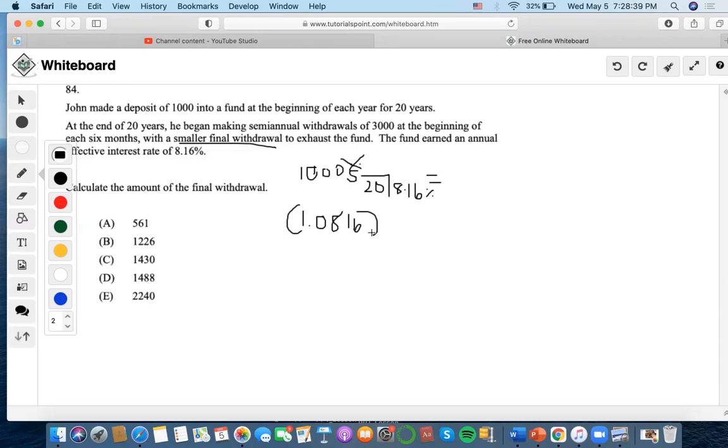8.16 as the interest rate, 0 as the present value. We're going to compute the future value. It's going to be 50,382.16.